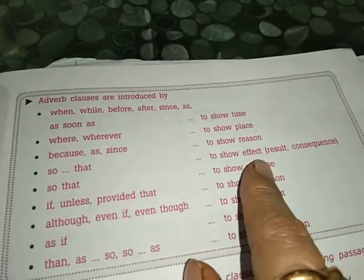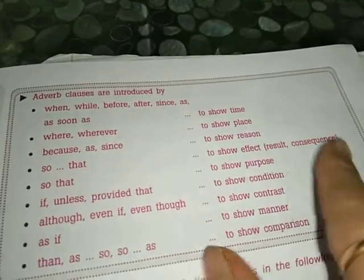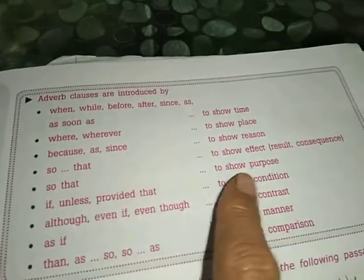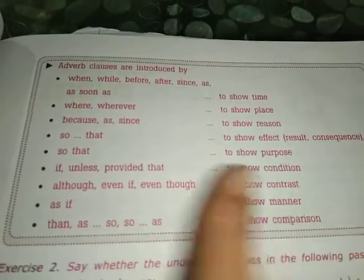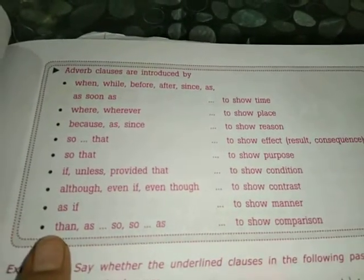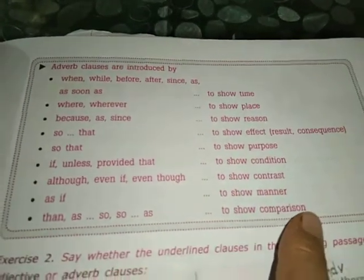To show effect, result, or consequence: so that. To show purpose: so that — what is the purpose of the action being done. To show condition: if, unless, provided that. To show contrast: although, even if, even though. To show manner: as if. To show comparison: as, so, as.